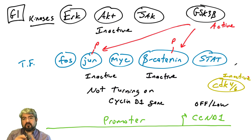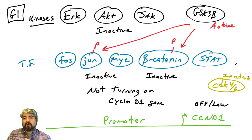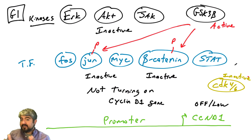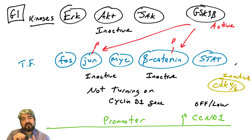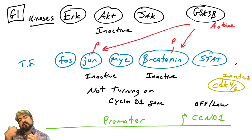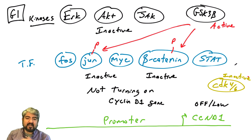The result of this is that when cells are in G1, the CDK4 or CDK6 kinase, which depends upon cyclin D1, is not active. These kinases depend on binding to cyclin D1, but cyclin D1 levels are low or non-existent, so the kinase is not active.